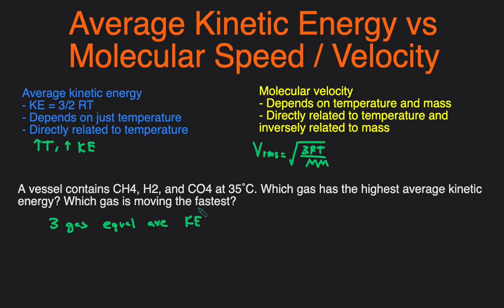The second question: which gas is moving the fastest? Well, we know that speed is dependent on both temperature and mass. Since the temperature is the same here, we just have to take a look at the molar mass. CH4 is 16, H2 is about 2, and CO2 is about 44. So the gas that's going to be moving the fastest is the gas that's the lightest, so it's going to be H2. H2 will be the fastest, then CH4 will be the second fastest, and then CO2 will be the slowest because it's the heaviest. And that's the difference between average kinetic energy and molecular speed.